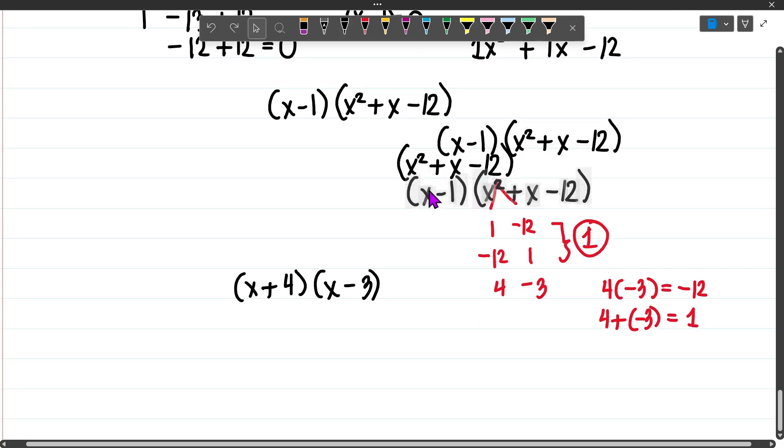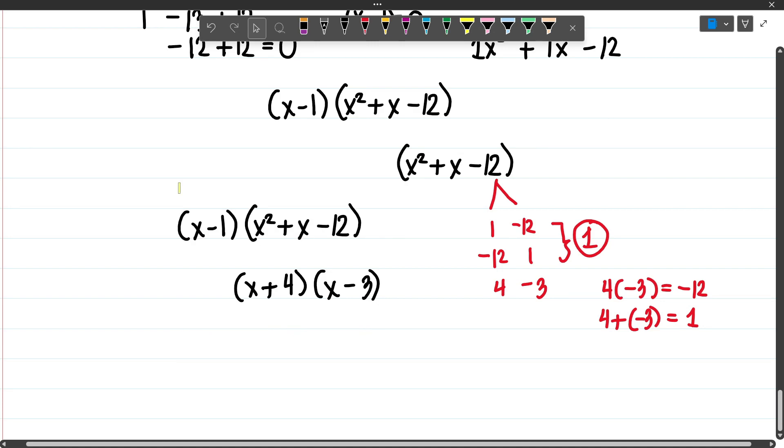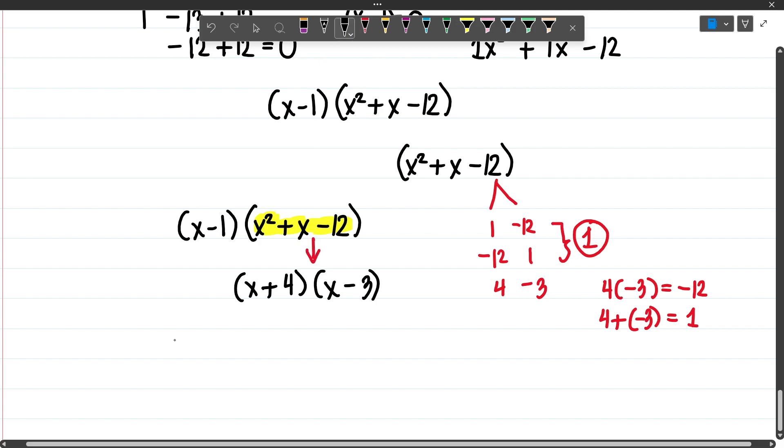Let's copy this one. Now we have factored out this equation into this expression. So our final factors will be x minus 1 times x plus 4 times x minus 3.